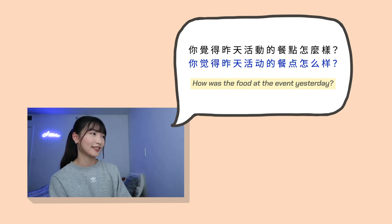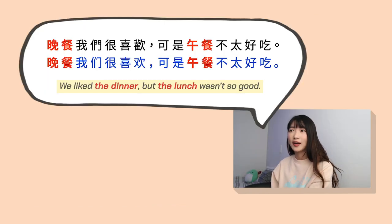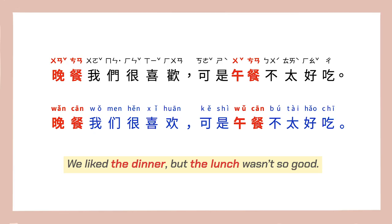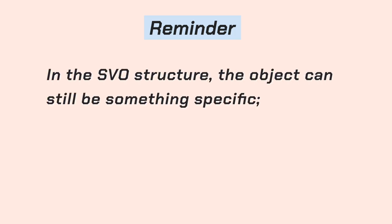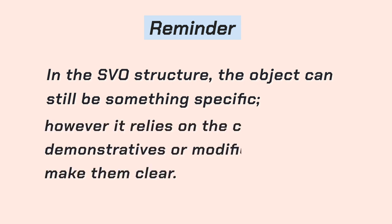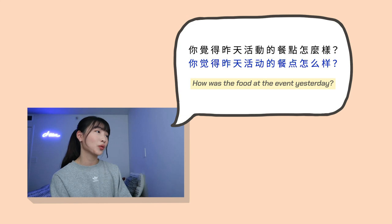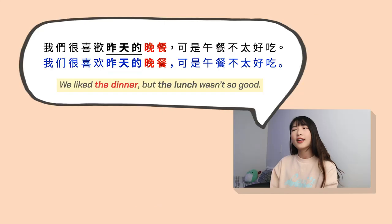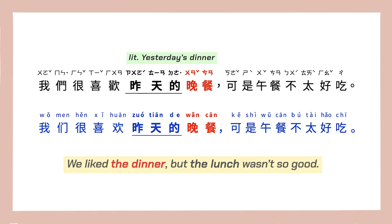另外一个例子 — 你觉得昨天活动的餐点怎么样? 晚餐我们很喜欢,可是午餐不太好吃 — We liked the dinner, but the lunch wasn't so good. In the SVO structure, the object can still be something specific. However, it relies on context, demonstratives, or modifiers to make them clear. For example: 你觉得昨天活动的餐点怎么样? 我们很喜欢昨天的晚餐,可是午餐不太好吃.